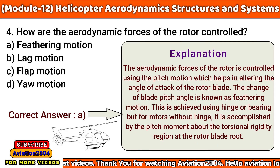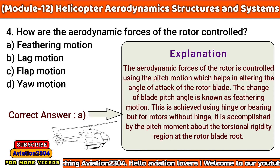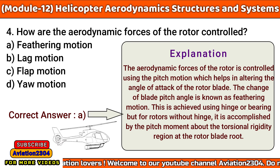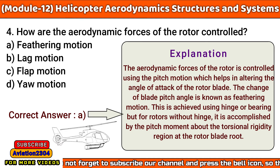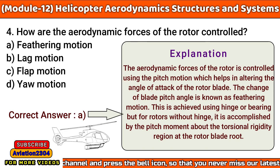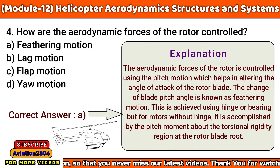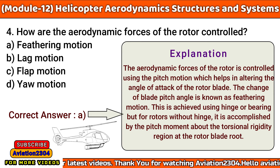How are the aerodynamic forces of the rotor controlled? A. Feathering motion, B. Lag motion, C. Flap motion, D. Yaw motion. The correct answer is A. The aerodynamic forces of the rotor are controlled using the pitch motion, which helps in altering the angle of attack of the rotor blade. The change of blade pitch angle is known as feathering motion. This is achieved using a pitch bearing, but for rotors without a hinge, it is accomplished by the pitch moment about the torsional rigidity region of the rotor blade root.